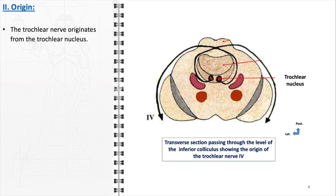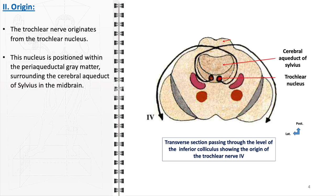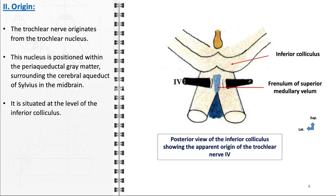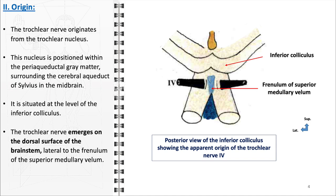The trochlear nerve originates from a specific area in the brain called the trochlear nucleus, strategically located within the periaqueductal gray matter — an area that encircles the cerebral aqueduct of Sylvius, a narrow channel found in the midbrain. The positioning of the trochlear nucleus is noteworthy as it is set at the level of the inferior colliculus, a landmark structure in the midbrain involved in auditory processing. From its origin, the trochlear nerve uniquely emerges on the dorsal surface of the brainstem, specifically lateral to the frenulum of the superior medullary velum. This unique dorsal emergence and long intracranial path contribute to its vulnerability to injury, impacting eye movement control.